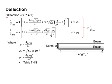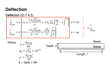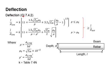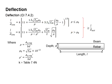Eurocode provides two equations to check for the deflections of a RC structure, referred from Clause 7.4.2. When rho is less than rho-naught, the first equation is applied. When rho is more than rho-naught, the second equation will be used.